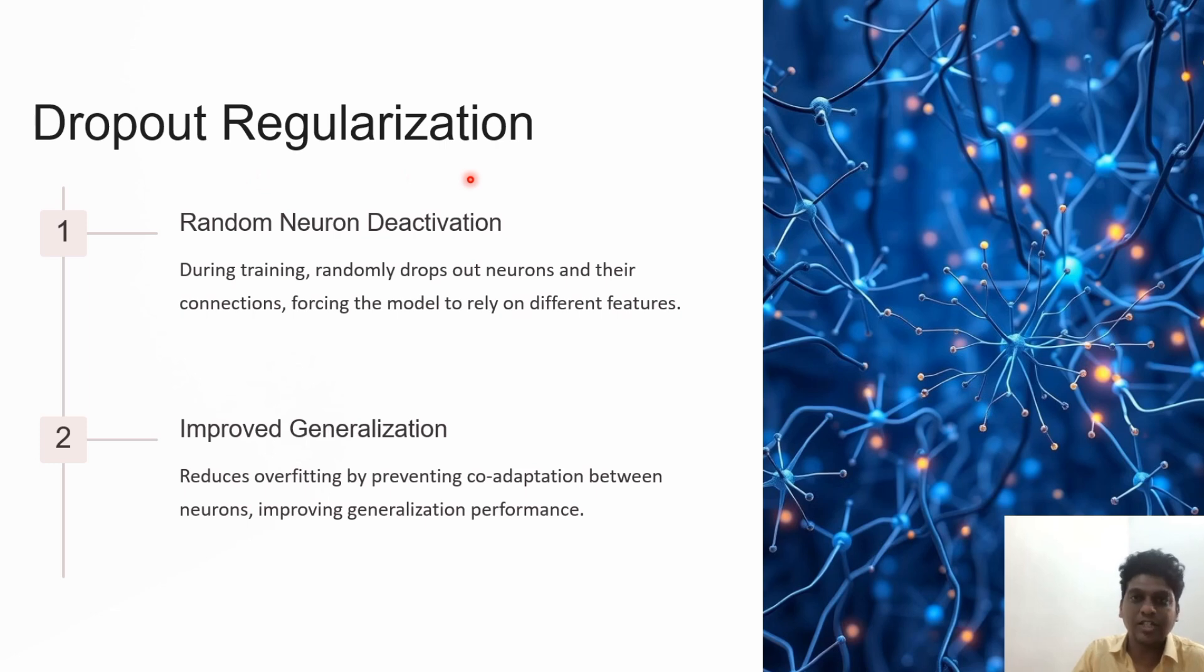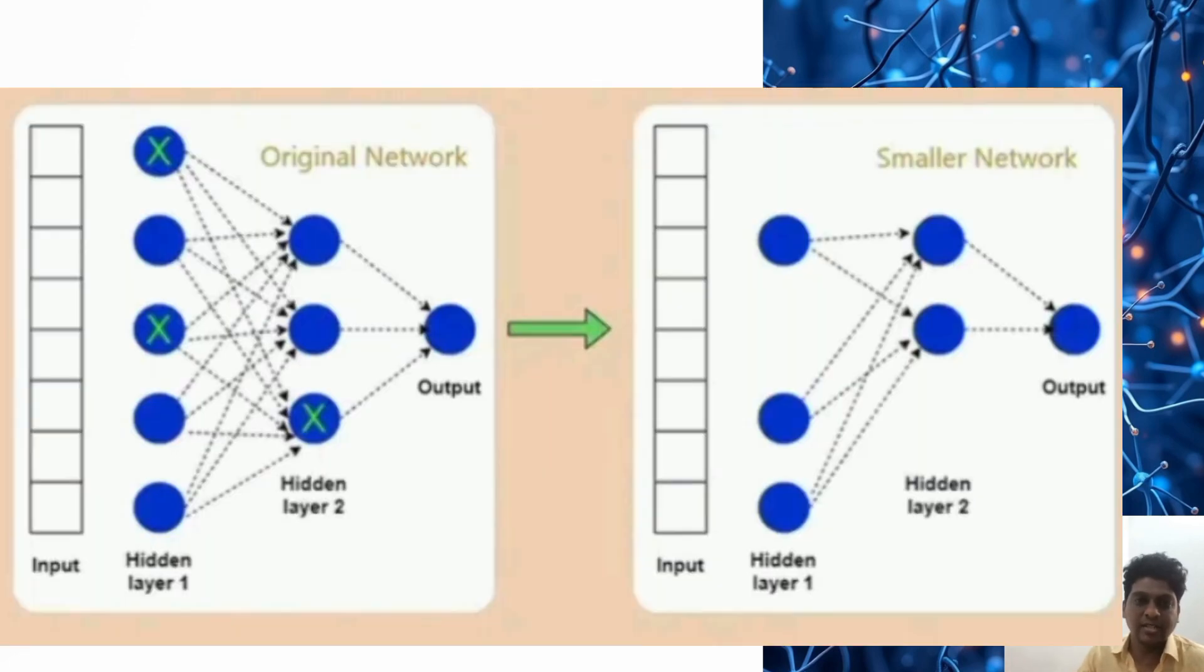Dropout regularization: In addition to previous techniques, this is helpful in both machine and deep learning. While training neural networks, we drop some neurons and their connections, forcing the model to depend on different features. This improves generalization and reduces overfitting by preventing co-adaptation between neurons.